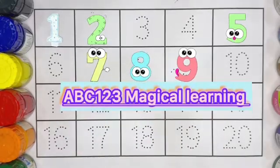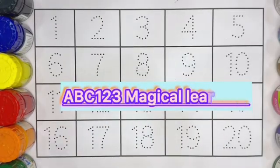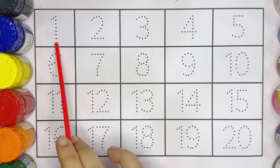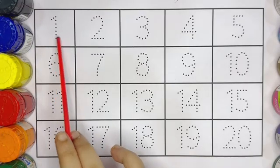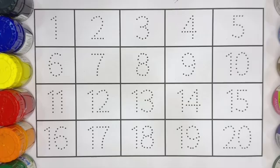Hello kids, welcome to ABC 123 Magical Learning. Let's learn number counting 1 to 20 with different colors and tracing. Kids, now let's write the number with different colors.